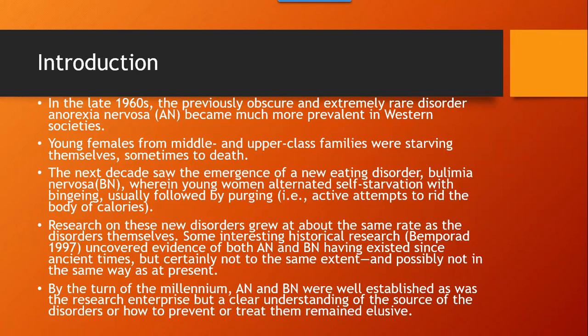Research on these new disorders grew at about the same rate as the disorders themselves. Some interesting historical research uncovered evidence of both anorexia and bulimia having existed since ancient times, but certainly not to the same extent and possibly not in the same way as at present. By the turn of the millennium, anorexia and bulimia were well established, as was the research enterprise, but a clear understanding of the source of the disorders or how to prevent or treat them remained elusive.